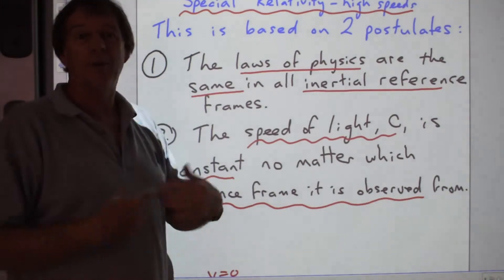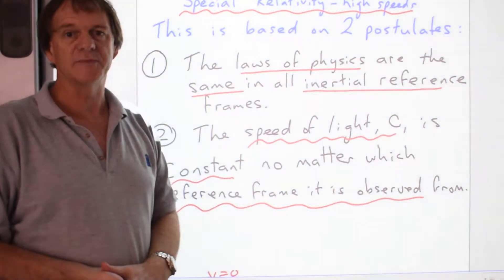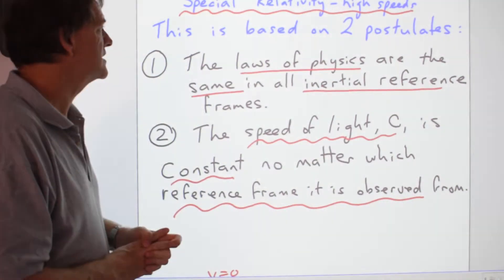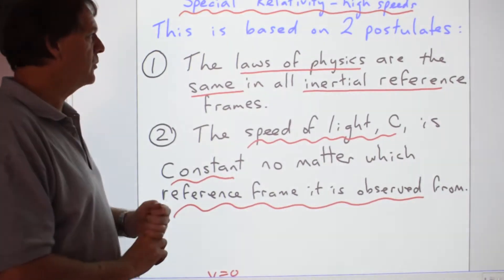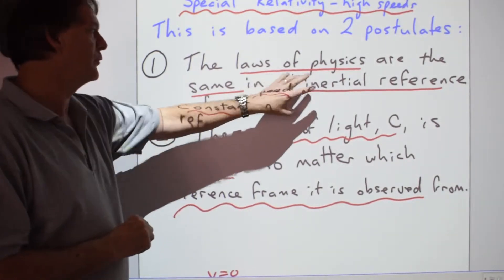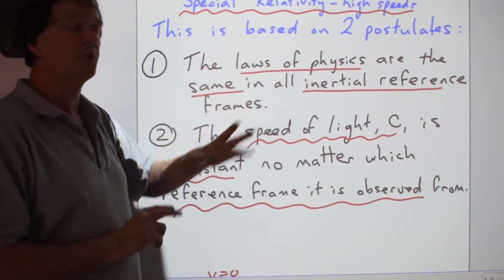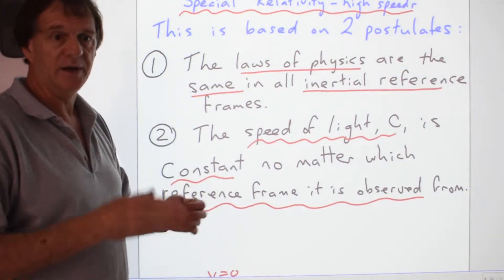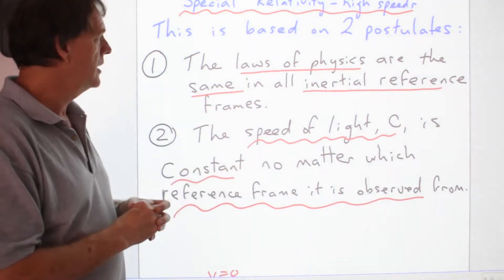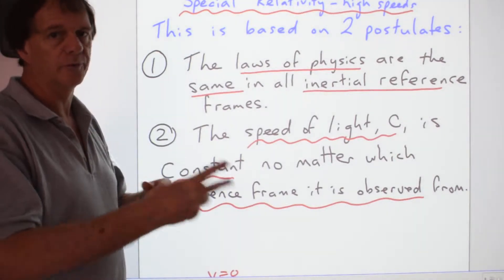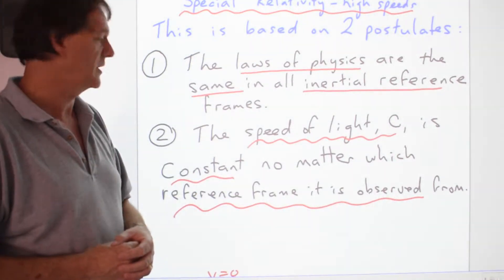Now, special relativity refers to what's going to happen at higher speeds, much higher speeds than we normally experience, and this is the weird one. It's based on two postulates. The first one we've already been using, the idea that the laws of physics are the same in all different inertial reference frames. It doesn't matter which one you're in. If it's a steady speed or zero, you're going to get the laws of physics behaving the same.